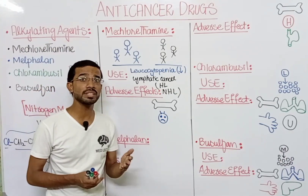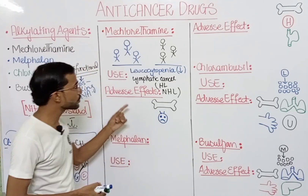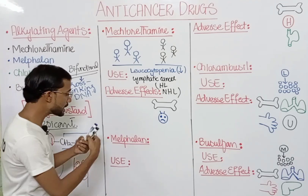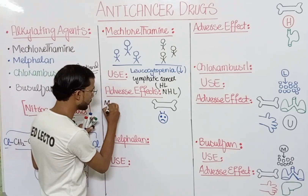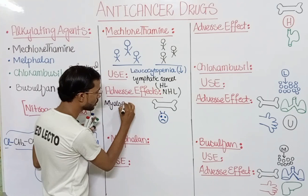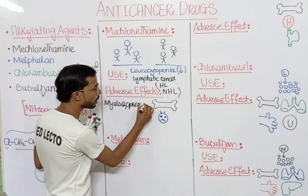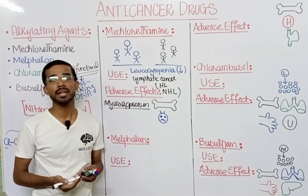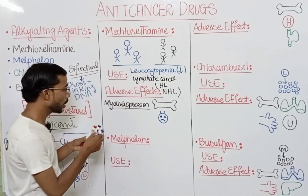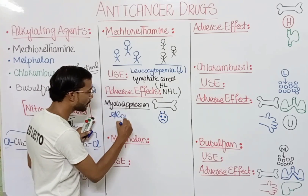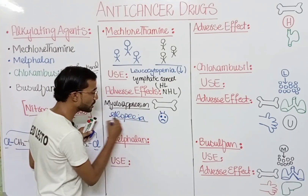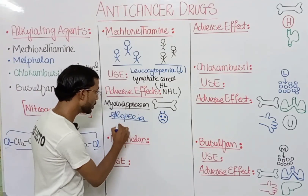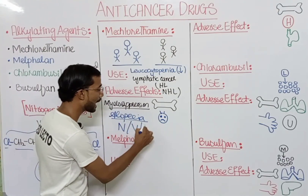Regarding adverse effects of mechlorethamine: first, it is a vesicant, causing severe burns and blister formation. Second is myelosuppression — reduced production of blood cells. You can also see alopecia, which is loss of hair, and general symptoms like nausea, vomiting, and diarrhea.